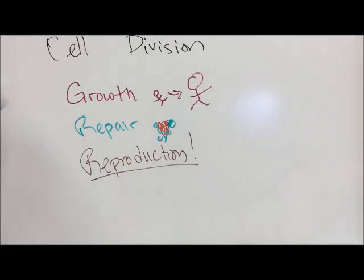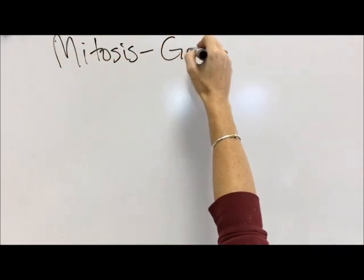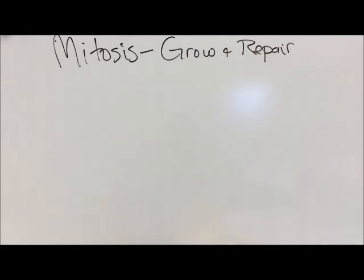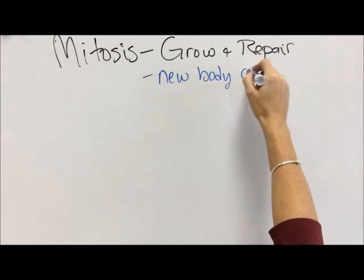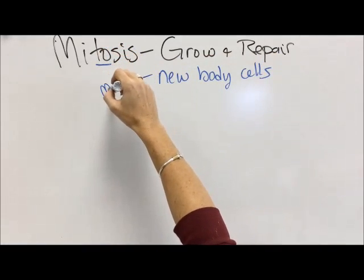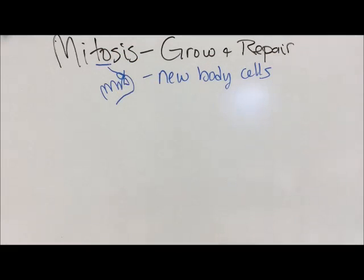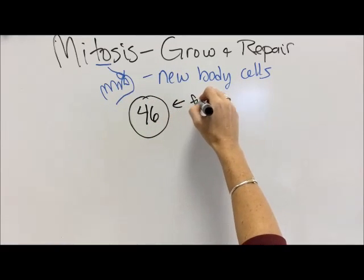Cell division for reproduction can take place in a couple of different ways. If you were a unicellular organism like a bacteria and you reproduced asexually, then you might do mitosis. And in our body, mitosis happens for growth and repair. So in the human body, mitosis is what you need in your big toe to get new body cells. You stub your toe, you get an injury, you need mitosis.